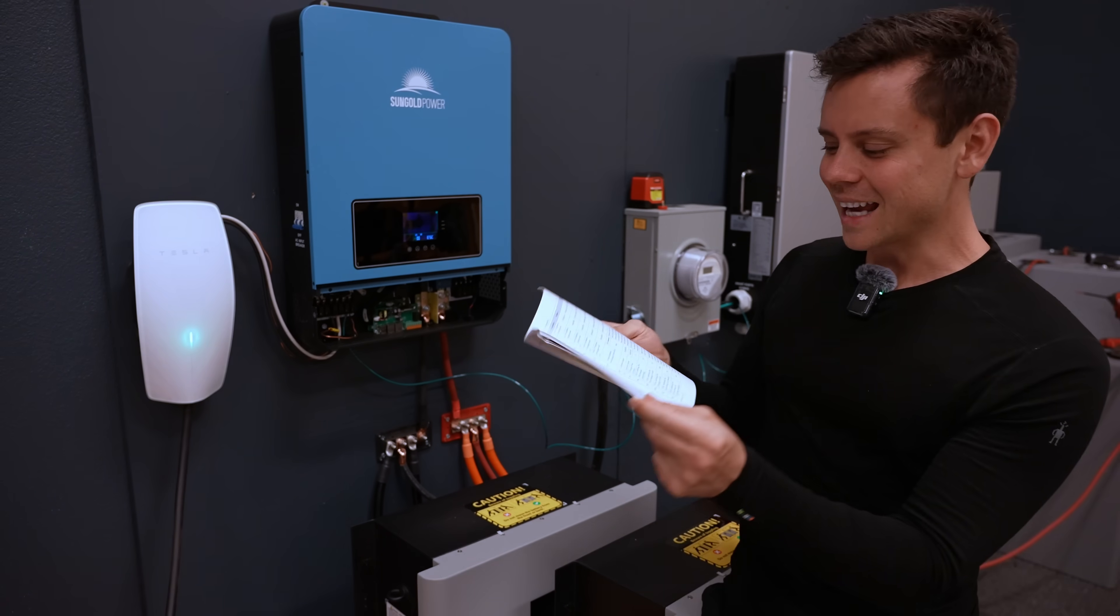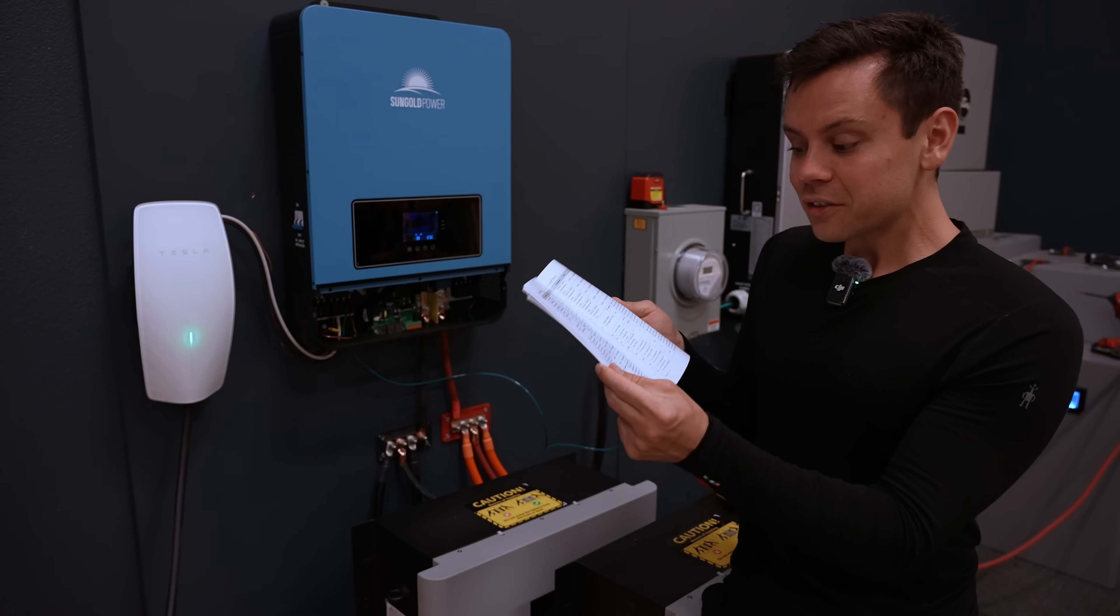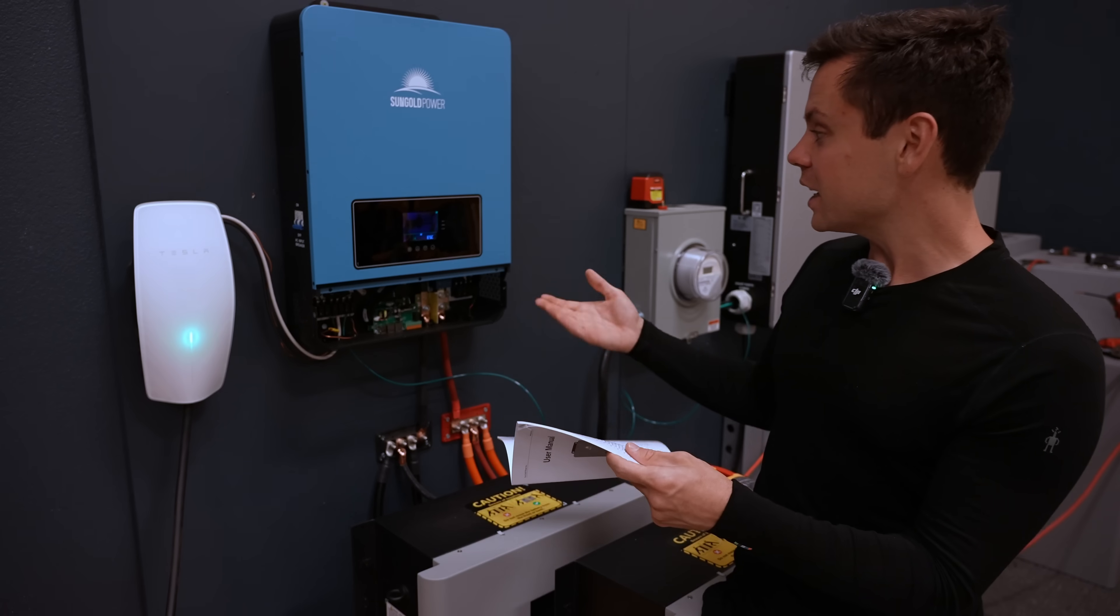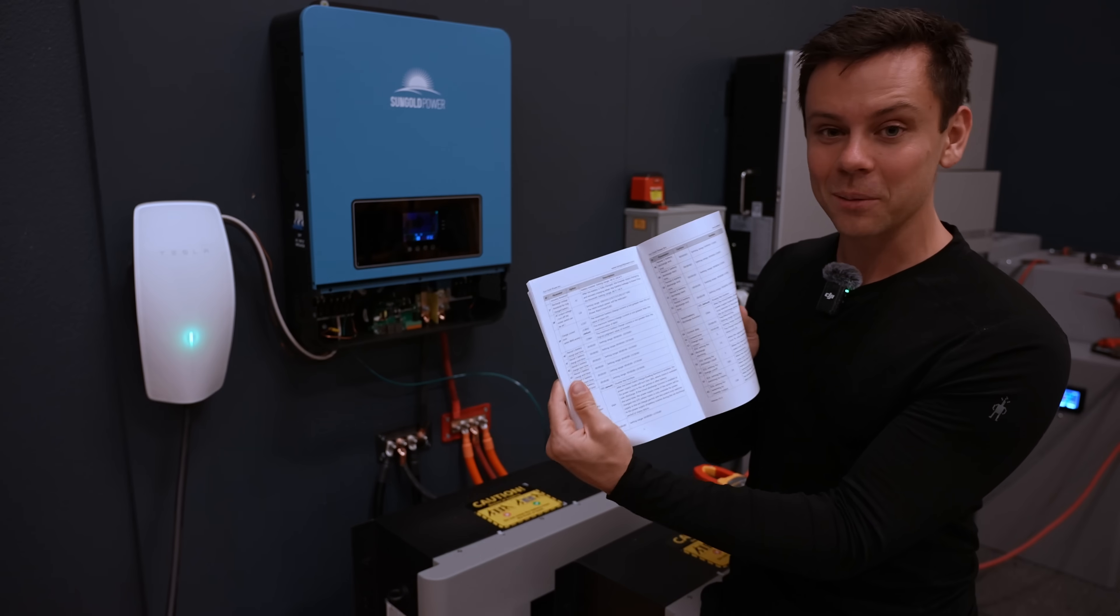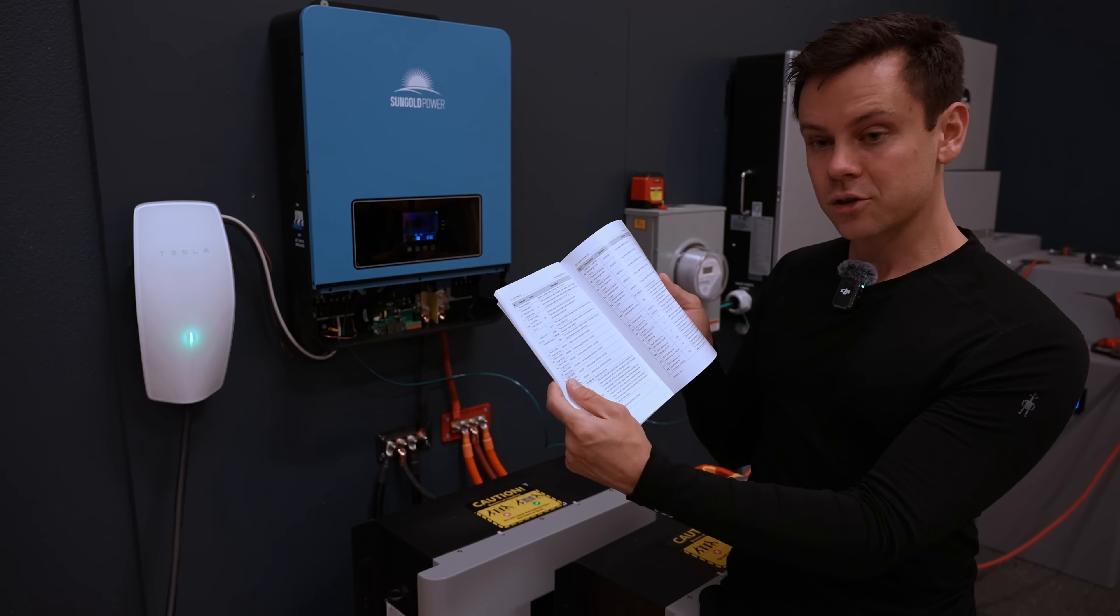Next there are 68 options for the settings which is fantastic and you don't need to use an app or computer and it's very easy to set up compared to like a 6,000 XP, but it takes a long time to flip through all of these. But it does have some cool settings including scheduled charging.